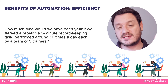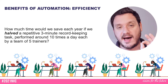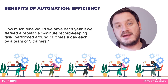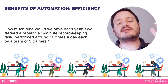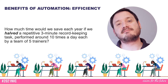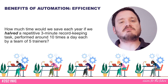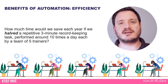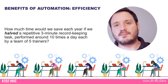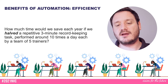How much time would we save each year if we just halved a repetitive three-minute record-keeping task performed around 10 times a day, each by a team of five trainers? Now it's not an uncommon scenario. We might dismiss a little three-minute task — it's just filling out a spreadsheet or firing off an email or a report after an assessment has commenced. Not an uncommon situation for an RTO.